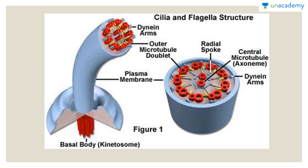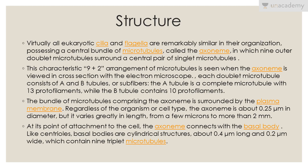Now let's talk about the structure of cilia and flagella. We have two central microtubular structures — the axoneme — connected to the outer microtubular doublet by radial spokes. There are also dynein arms that protrude from the doublets, and this is surrounded by the plasma membrane. Virtually all eukaryotic cilia and flagella are remarkably similar in their organization, possessing a central bundle of microtubules called the axoneme, with nine outer doublet microtubules around a central pair of singlet microtubules — a characteristic nine-plus-two arrangement seen in cross section.